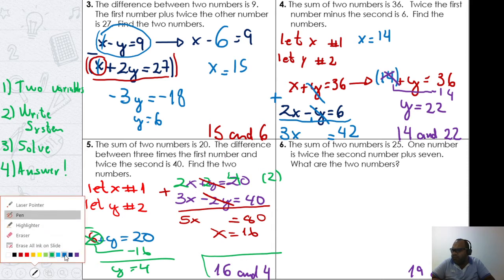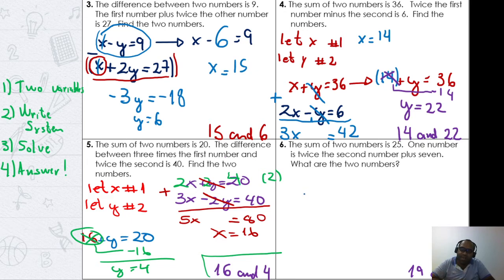Number 6: The sum of two numbers is 25. Let's define our variables. My first number is x, my second number is y.